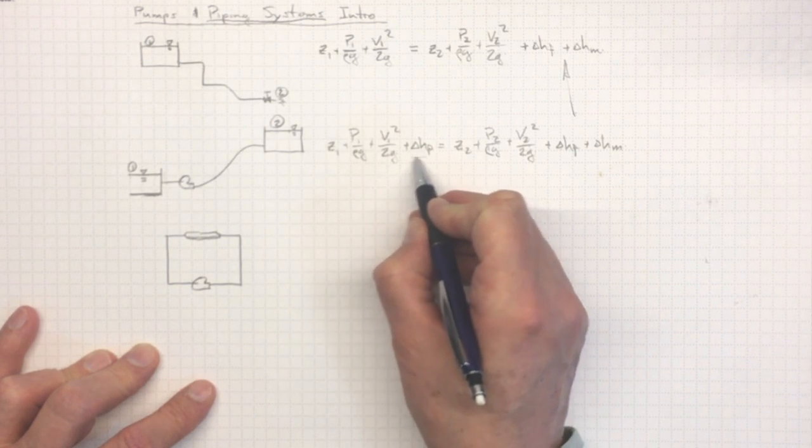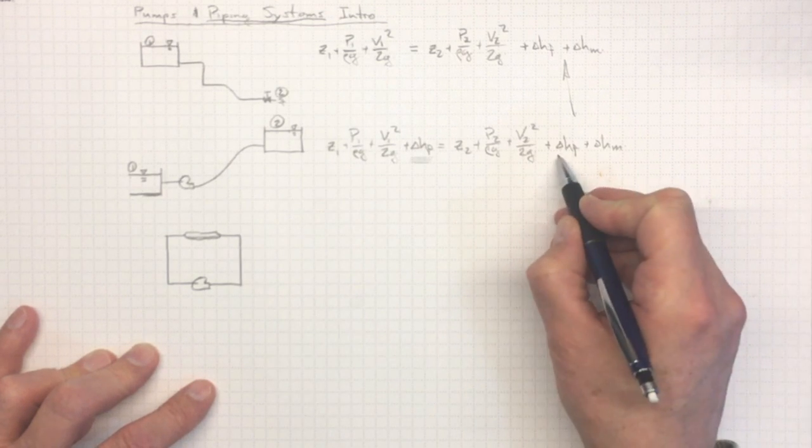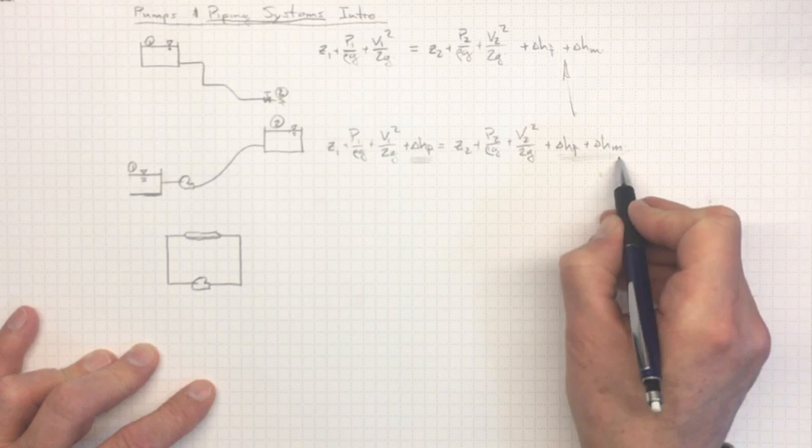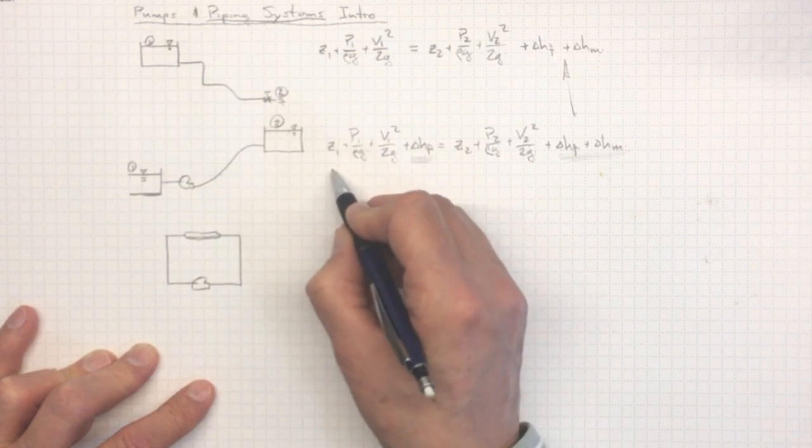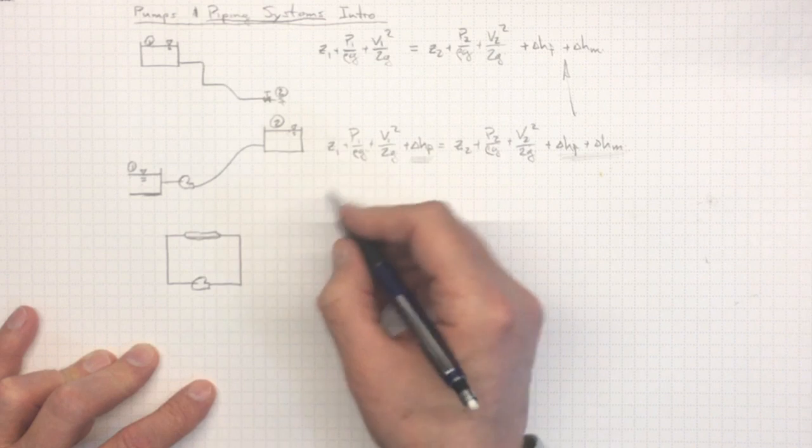Plus whatever we lost along the way due to friction and minor losses. So now we're doing some useful work with our pump to overcome the differences due to friction and minor losses and any change in energy state, for instance, to get the water up the hill.